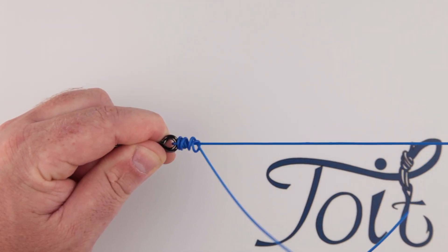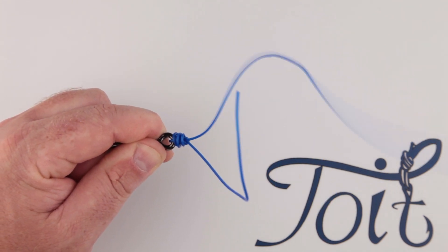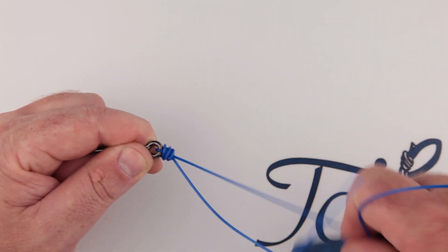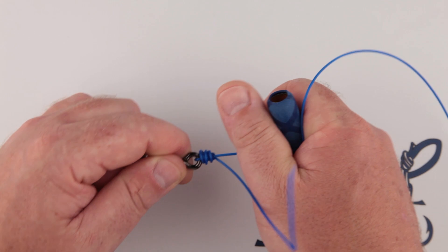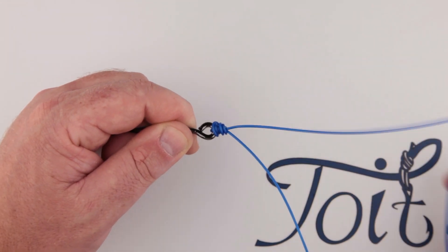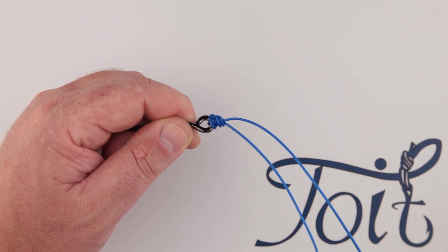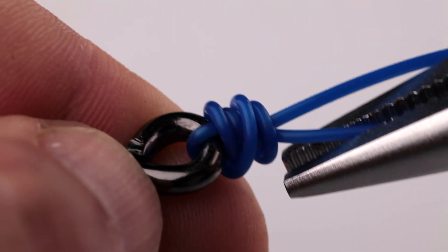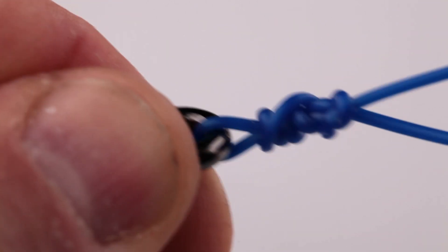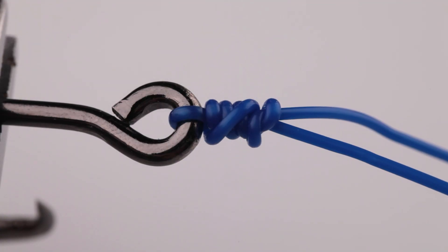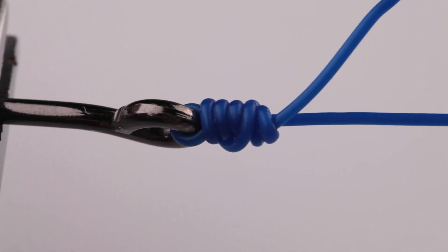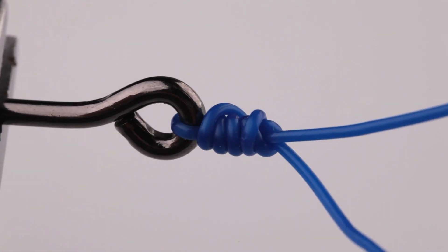Then pull the standing end slowly and allow the knot to slip to the hook eyelet. Then you can cinch this down hard alternating between the standing end and the tag end. Make sure the line running down the side of the knot is neat and tidy in the middle of the knot. Ensure the knot looks like a pizza knot.